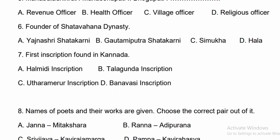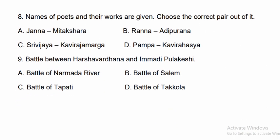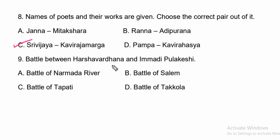Question eight: Names of poets and their works are given — choose the correct pair. The options include Janna/Mitakshara, Ranna/Adipurana, Shri Vijaya/Kavirajamarga, and Pampa/Kavirahasya. The correct option is C: Shri Vijaya wrote the Kavirajamarga.